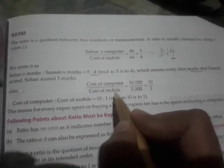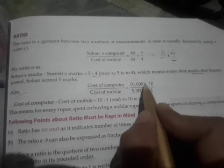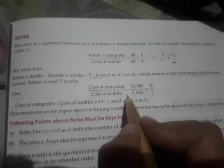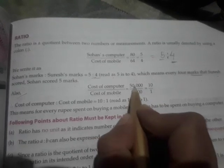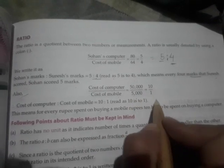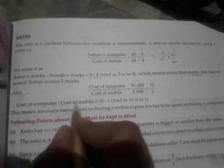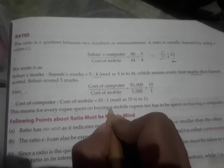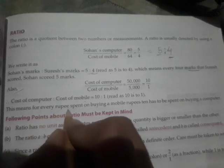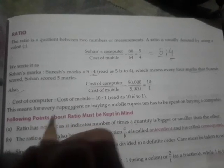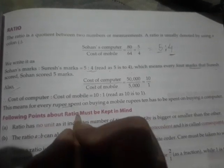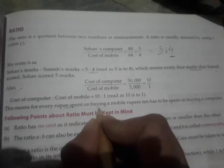Also, cost of computer to cost of mobile. Cost of computer is 50,000, cost of mobile is 5,000. Cost of computer ratio cost of mobile is 10 ratio 1. This means for every rupee spent on buying a mobile...